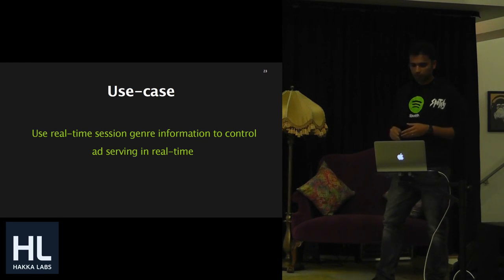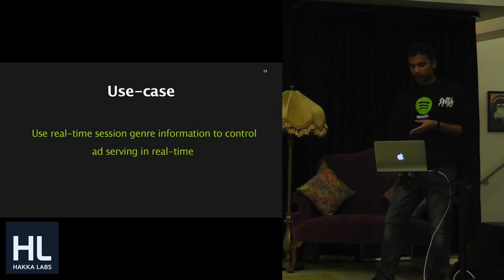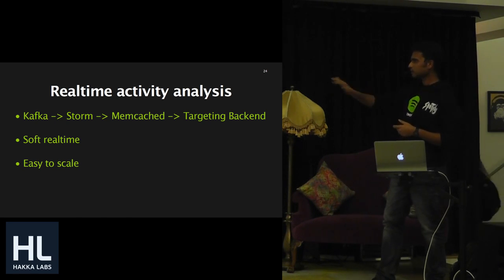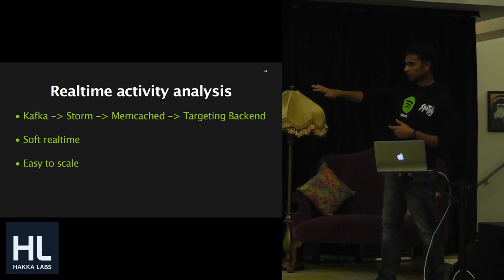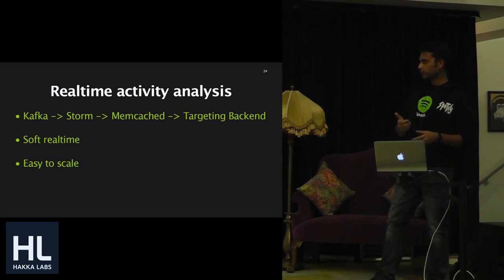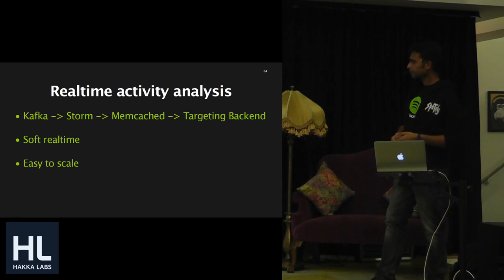The use case I'm going to talk about is using real-time session genre information to control ads in real time. We use Storm to process all the log messages we get in real time, generate the profile of users based on the genre they're streaming, and then use that in the targeting backend to give context back to the client so it can fetch the right ad from the ad server. The flow: Kafka collects the logs, sends them to Storm. Storm filters certain messages, aggregates them at a user level, stores all that user profile information in Memcached, which gets read by the targeting backend. This is an almost-real-time system that's easy to scale.